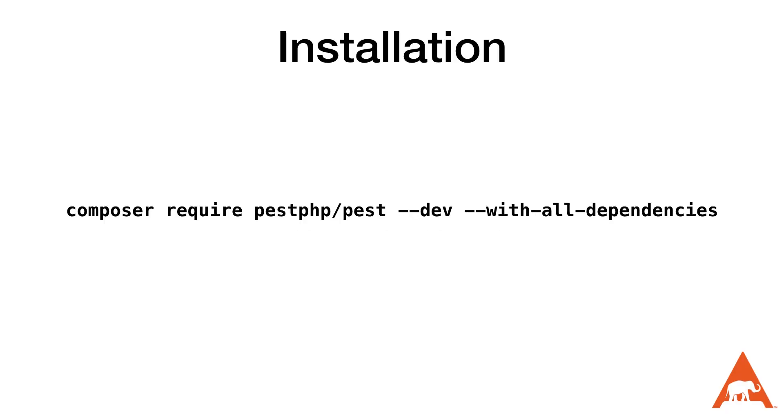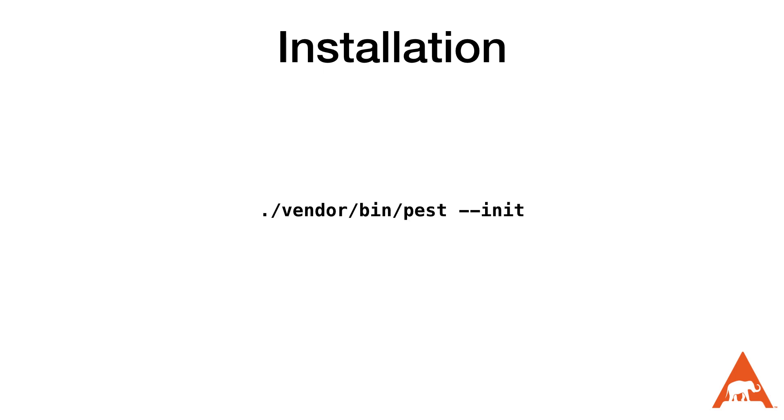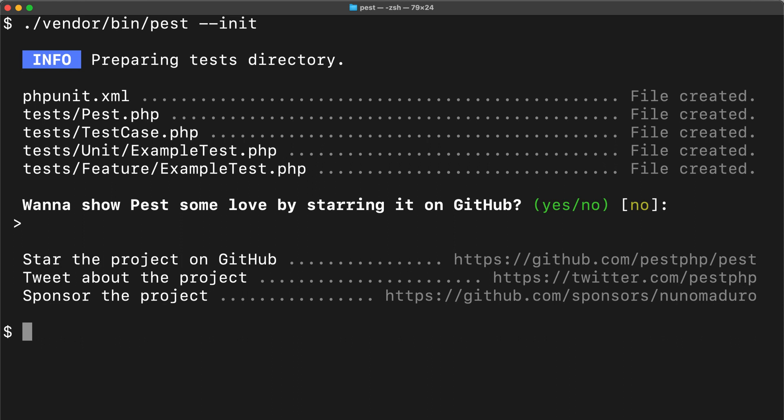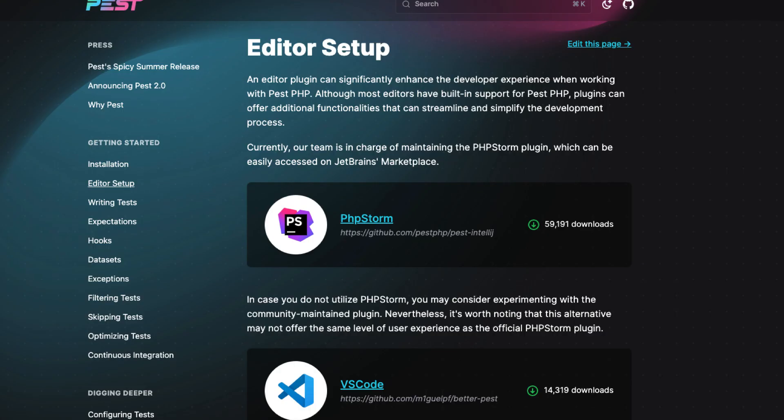As with most modern packages, installation is done using Composer. We also need to initialize PEST using the --init switch. This will create several files, including some example tests, the pest.php configuration file used by PEST, and a phpunit.xml configuration file used by PHPUnit if we don't already have it. There's also a wide variety of plugins or extensions for your IDE. It's not required, and I'll be using the command line for the remainder of this video, but I highly recommend installing a plugin for your IDE to speed up your development flow. Nothing beats the speed of running a single test or a file using a keyboard shortcut.